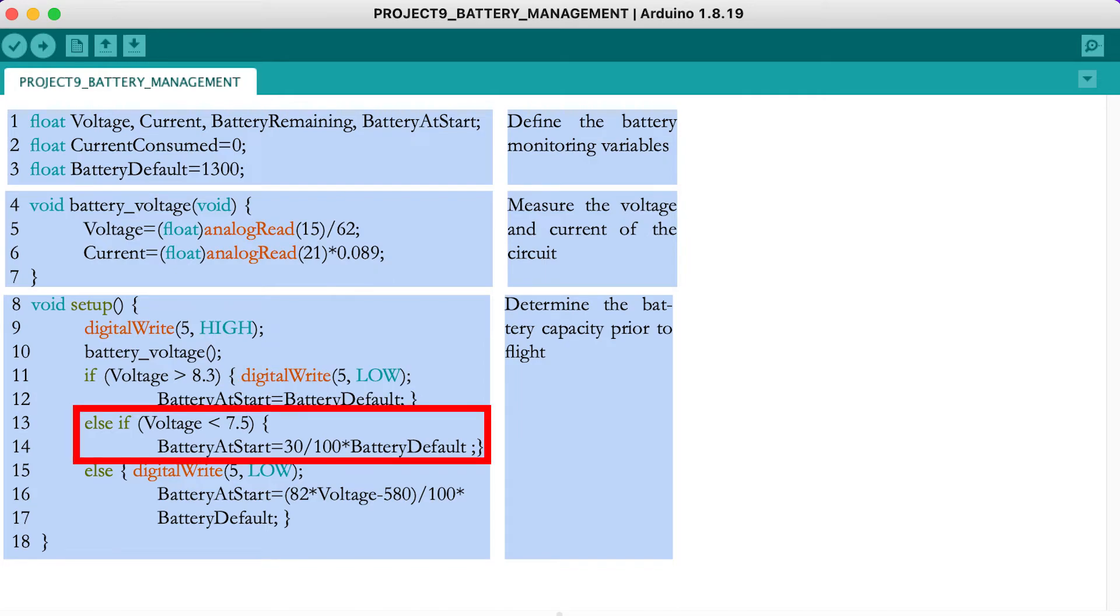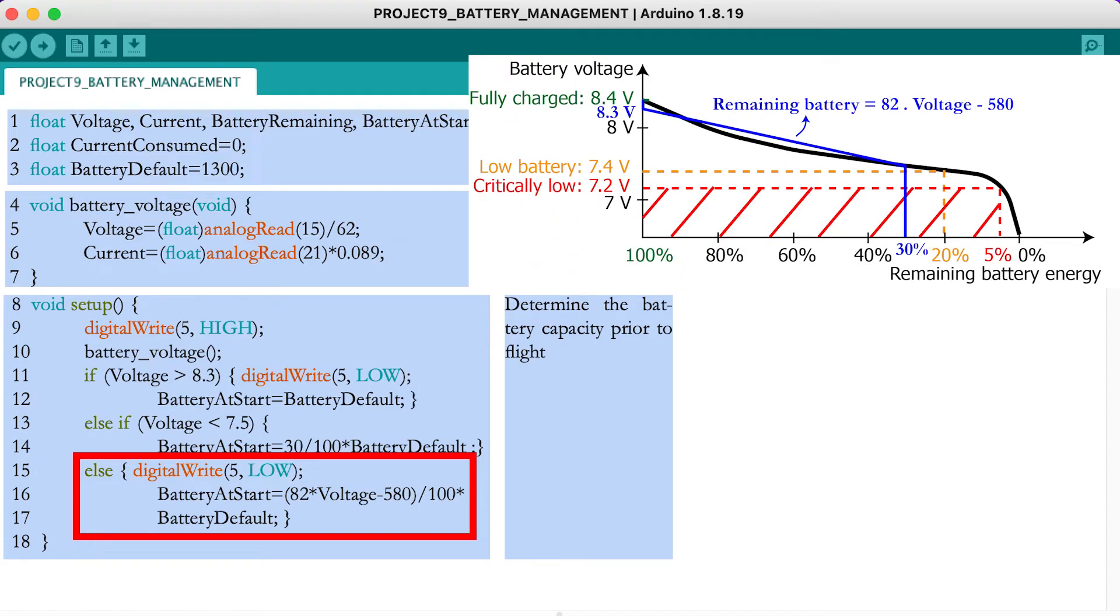If the voltage is lower than 7.5 volts, you consider the battery to be empty and the red LED stays on. In all other cases, you calculate the remaining battery level from the equation we saw on the figure at the start of this video.